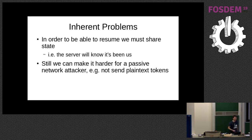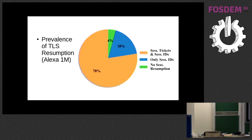How prevalent is this resumption problem? This is the Alexa Top Million — a proprietary top list of websites made by Amazon. What we can see is that only 4% of the internet is not using any form of session resumption. Conversely, the rest does. We can say the internet uses TLS session resumption not only to make your experience better, but also to save CPU cycles and round trips. So potentially these are all tracking you through the mechanisms we've seen.